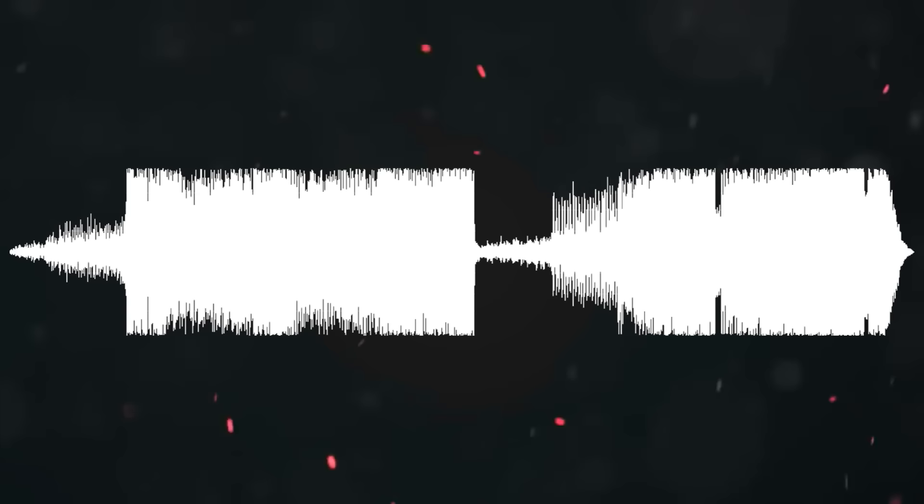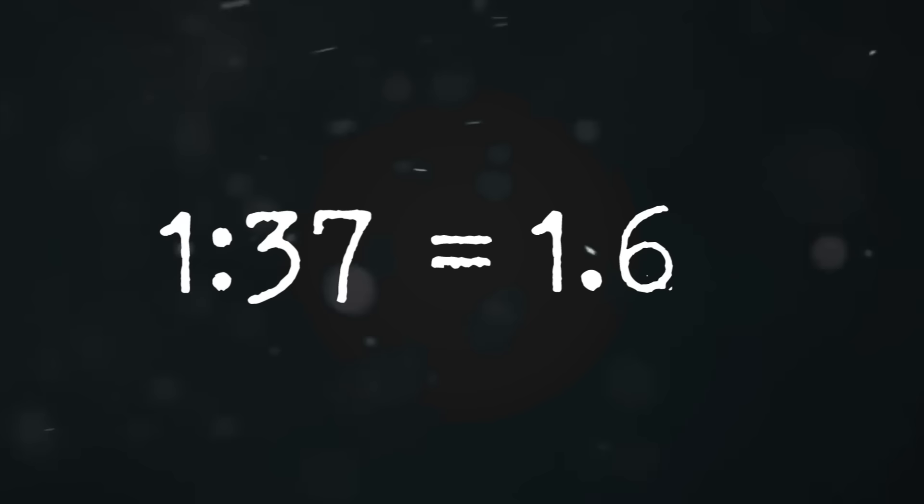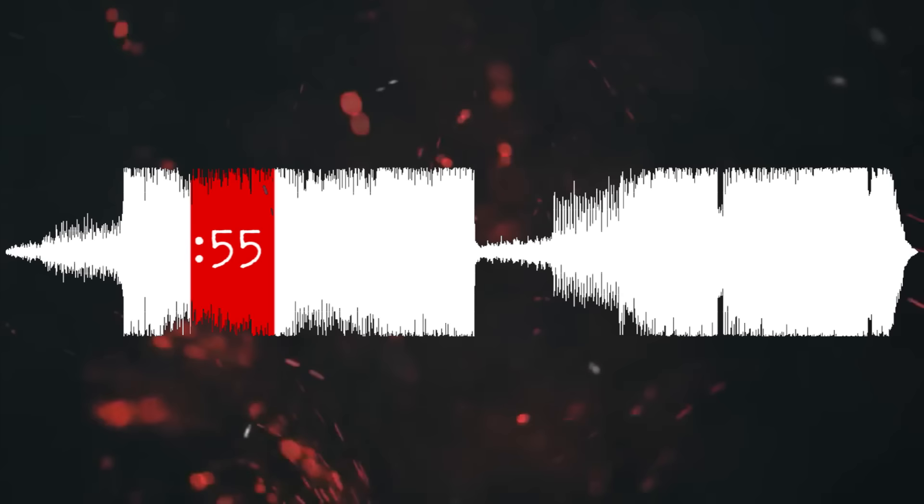Maynard James Keenan's vocals start 1 minute and 37 seconds into the song. Another way to look at that duration is 1.618 minutes. Furthermore, we can rearrange that 1 minute and 37 seconds to read 13 to 7, reflecting that 13 is the seventh number of the Fibonacci sequence. Each verse of the song also has a duration of 55 seconds. 55 is itself a Fibonacci number.